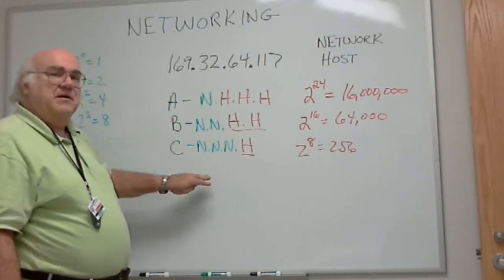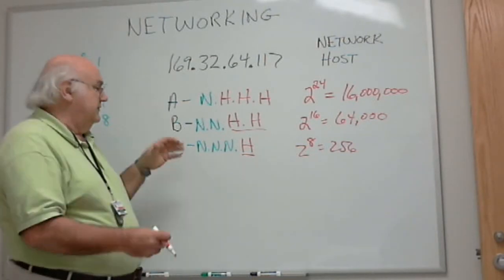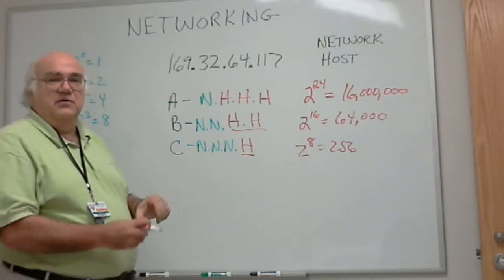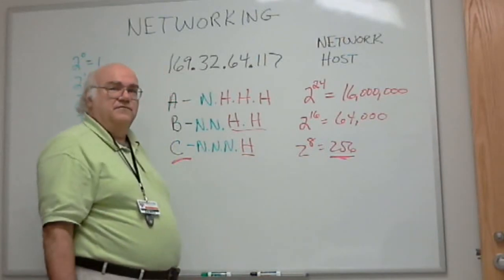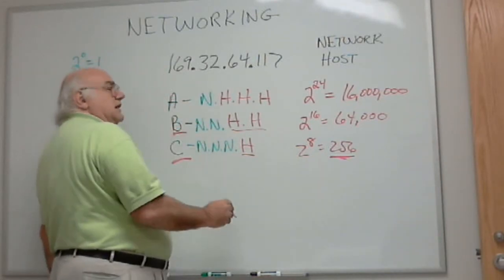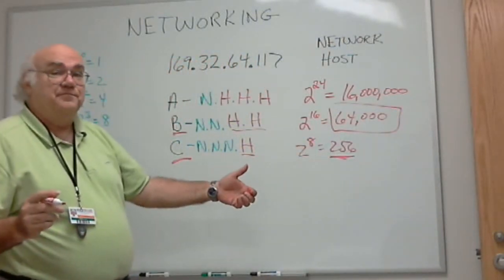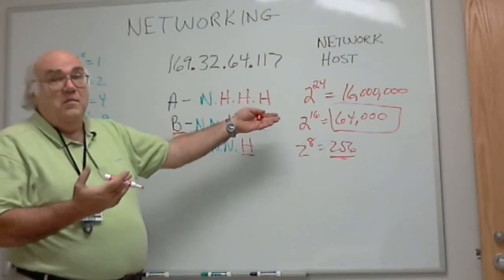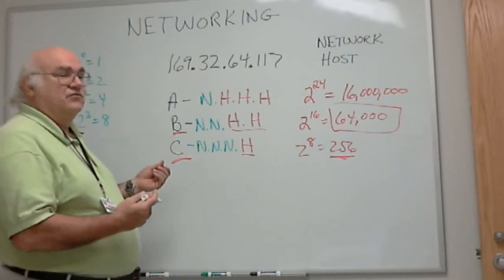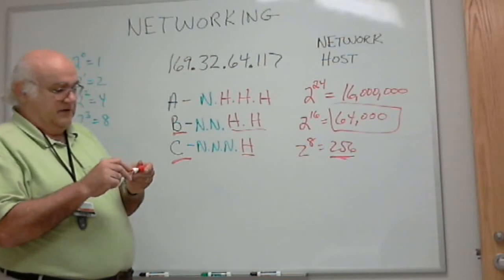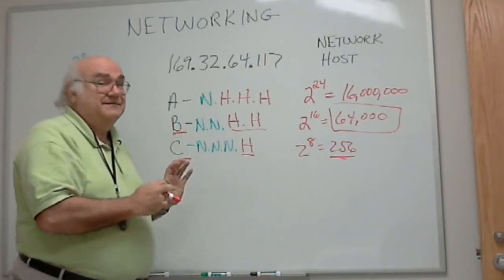And here's why. Let's say I'm a company with 300 computers. I go to the addressing authority and say I need an address. They go, well, you can't have one of these Class C because you can only have 256. So we have to give you a Class B. 64,000 addresses. I need 300 of them. I've just wasted almost 64,000 addresses. This is very inefficient. This is causing us to run out of address space. So in the next lecture, we'll go from a classful addressing scheme to a classless addressing scheme.